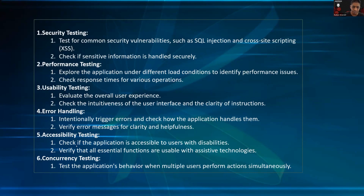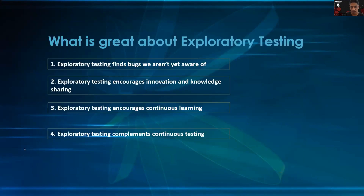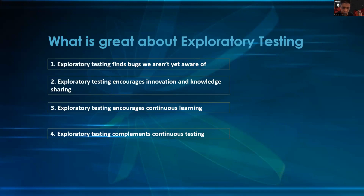What is great about exploratory testing? It finds bugs we usually do not find in a normal way. When your QA lead says 'run the regression,' running regression alone cannot ensure your application is defect-proof — issues will still come through. Exploratory testing tries to find the unknown and hidden parts of the application.